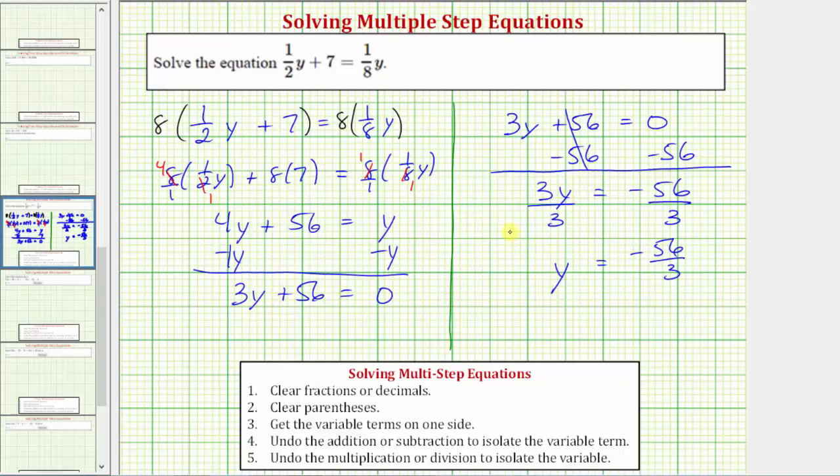Before we go though, let's verify our solution by substituting -56/3 for y in the original equation to make sure the left side of the equation equals the right side. Performing this substitution, we'd have ½ × (-56/3) + 7 = ⅛ × (-56/3).